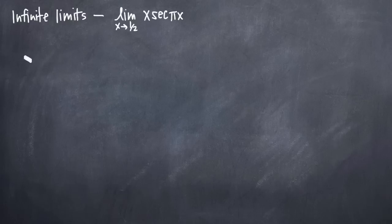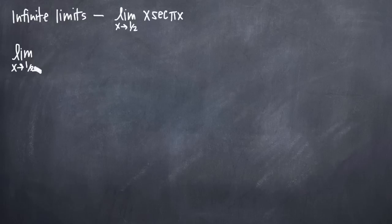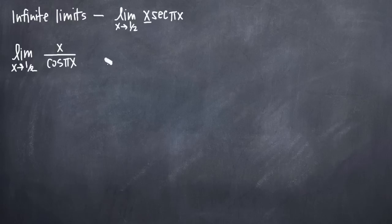So let's go ahead and change the function. We know that secant is the same as one over cosine. So we can say that our function here is the same as the limit as x approaches one-half of x divided by cosine of pi x. We just took the x in the numerator and changed secant of pi x into one over cosine of pi x.